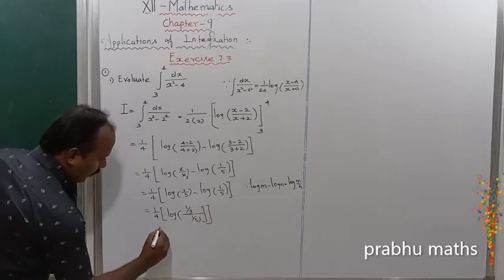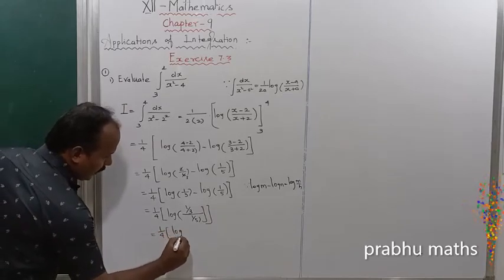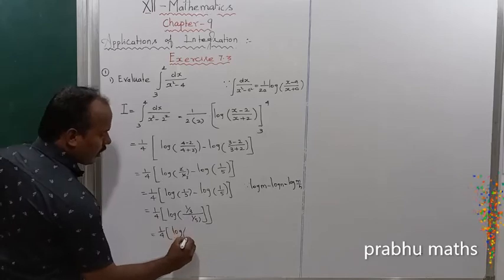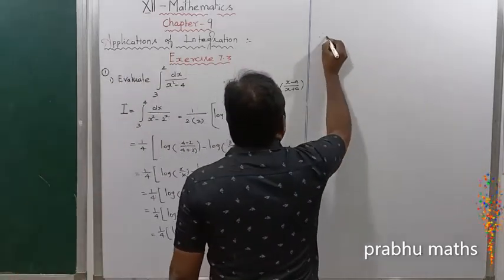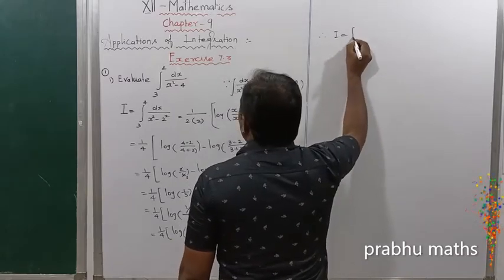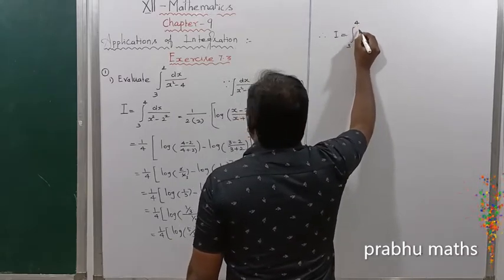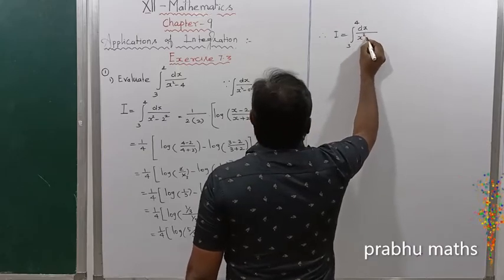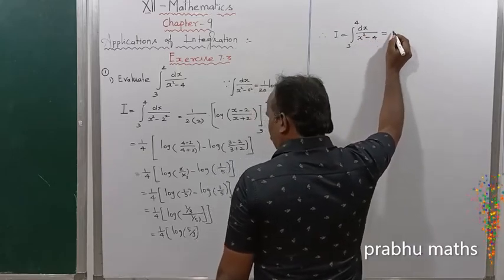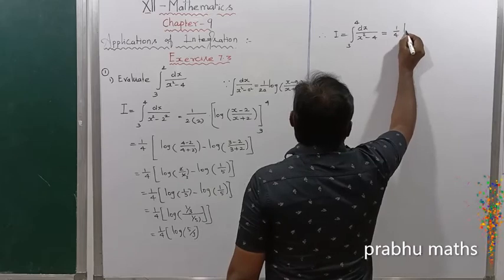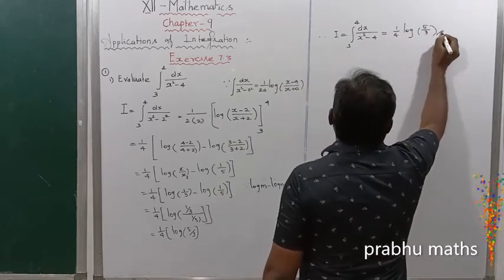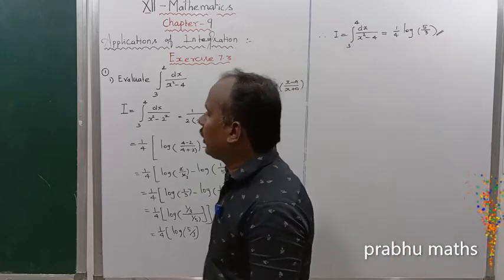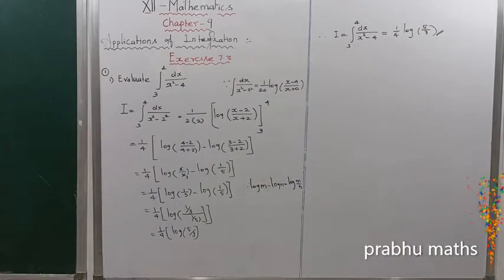So that equals 1 by 4 into: the reciprocal gives us 5 by 3. Therefore, I is equal to the integral from 3 to 4 of dx divided by x squared minus 4, which equals 1 by 4 into log of 5 by 3. This is the solution to problem 7.3.